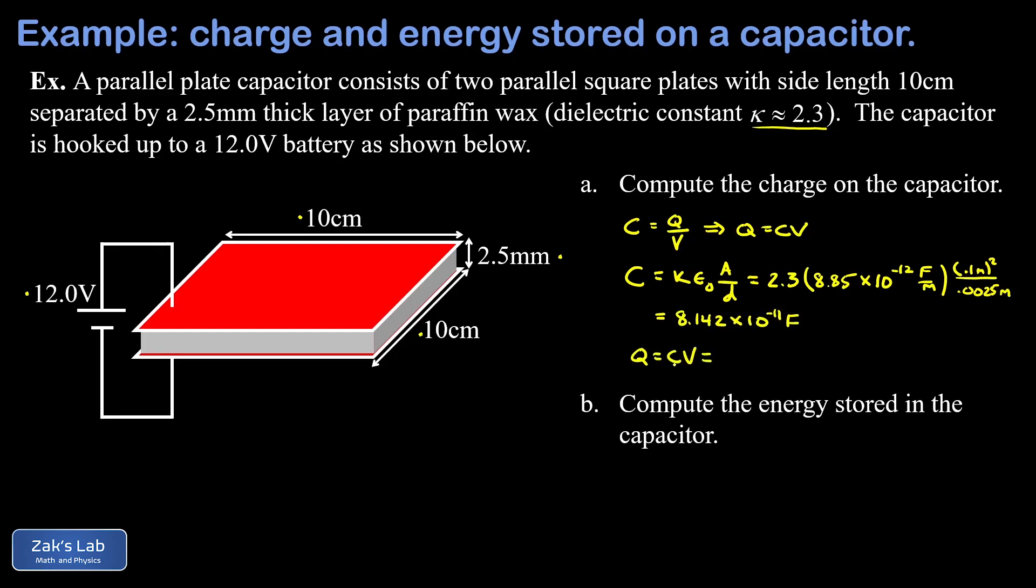Now we can go ahead and plug into this equation q equals c times v. And we get 8.142 times 10 to the negative 11 farads times 12.0 volts, giving us a total charge of 9.77 times 10 to the negative 10 coulombs.